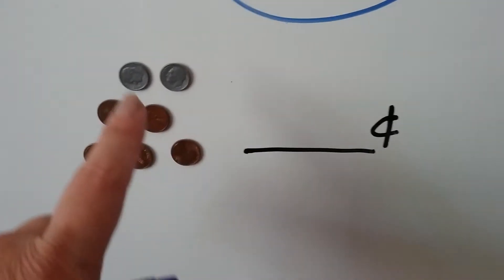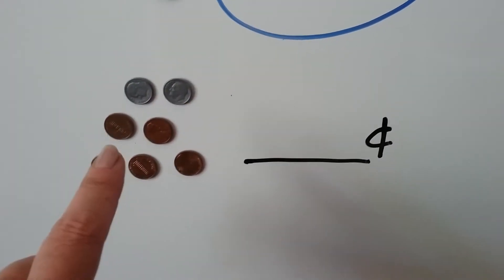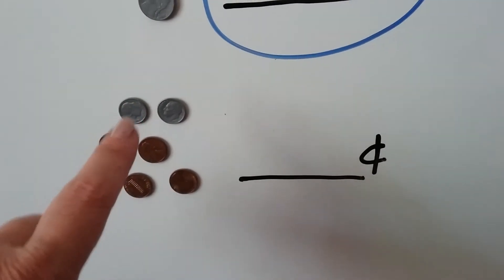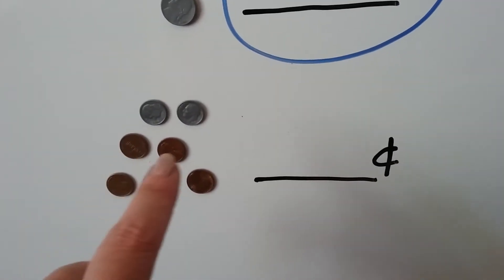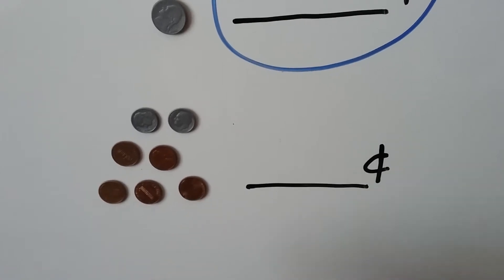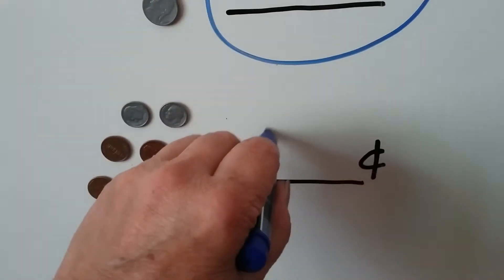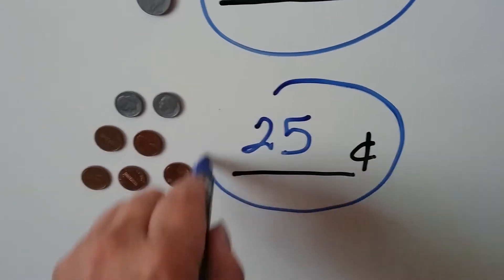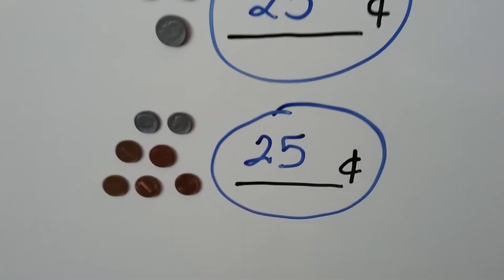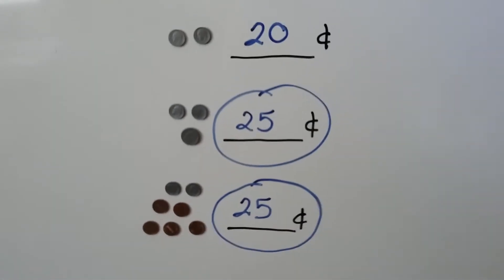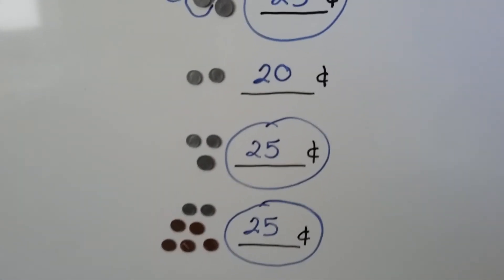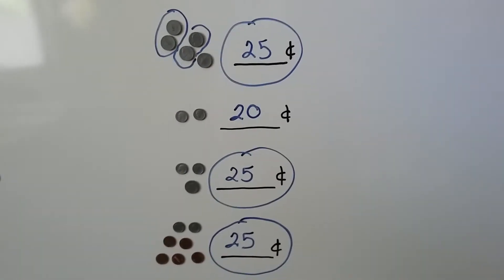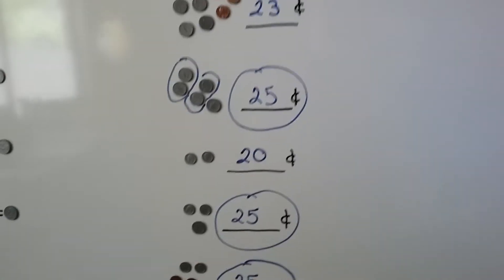How about here? We have a dime and a dime and five pennies — that's 10, 20, 21, 22, 23, 24, 25. That's 25 cents. We can circle that one too because it's equal to a quarter. So we can just use different coins to make them equal to a quarter, to 25 cents.